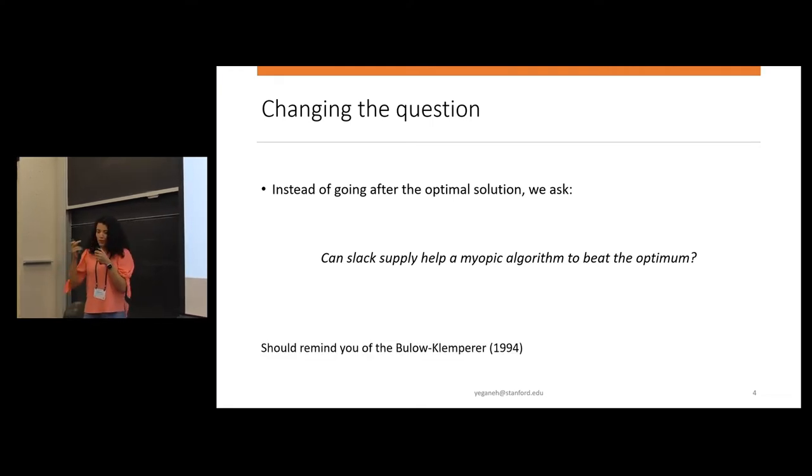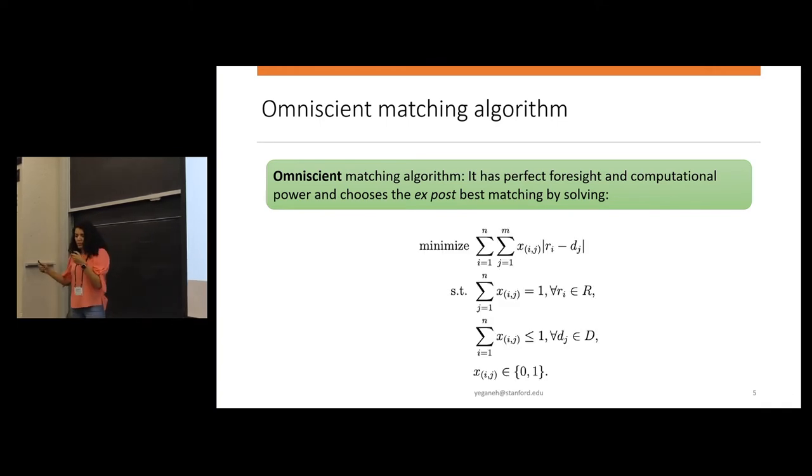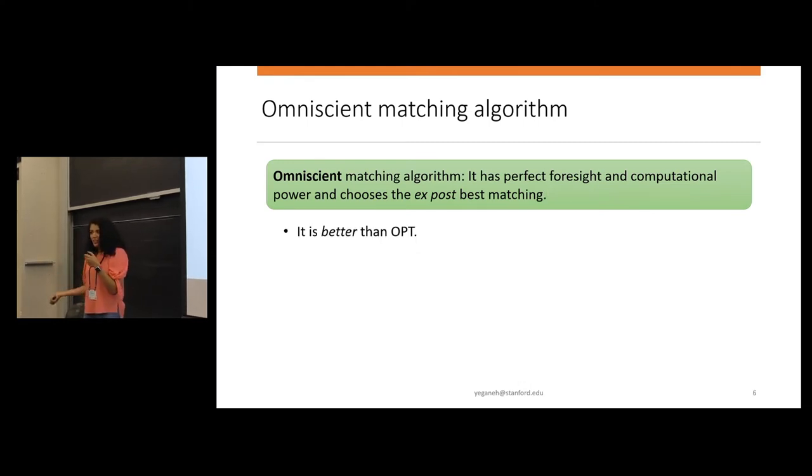So this kind of question should remind you of Bolo Klempera kind of result, or also the same kind of question that Amin and Mohamed and Suraj Maladi ask in optimal sitting in networks. So as a benchmark for optimal, we have an omniscient algorithm which is more powerful than optimal. It has perfect foresight about the future. It sees all the riders that arrive in the future and has computational power to choose the best matching exposed. So it's just solving this LP and find the best matching.